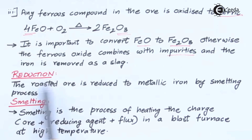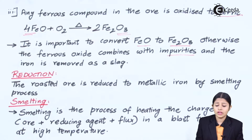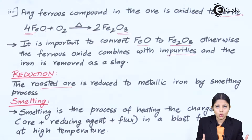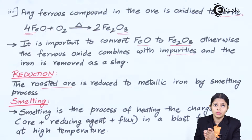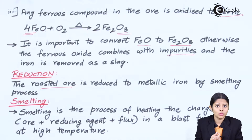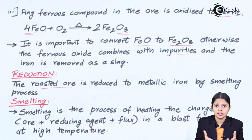Let us look at the second method, which is reduction. The roasted ore is reduced to metallic iron by the smelting process. It is very important that for performing reduction, the ore must be the roasted ore. You cannot take freshly ground ore and start reducing it directly. First you have to perform roasting, and after roasting the ore only can you reduce it. When we roast the ore, we remove all unwanted impurities and oxidize the ore — only after oxidation can we perform reduction.